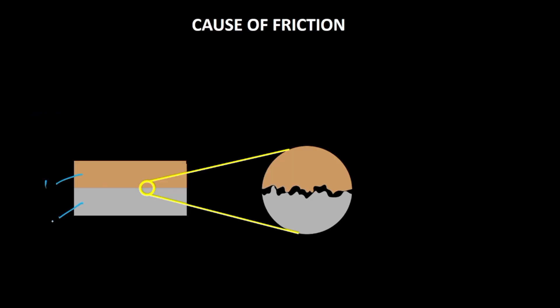Let's imagine that this is surface 1 and this is surface 2, and these are the two objects that are trying to slide against one another, or there is a relative motion about to happen between these two. The moment one of them slides over the other, if we see from a microscopic level, there are a lot of imperfections between these surfaces. The moment you try to slide one over the other, because of these imperfections they will get stuck into one another, and that is what results in friction.